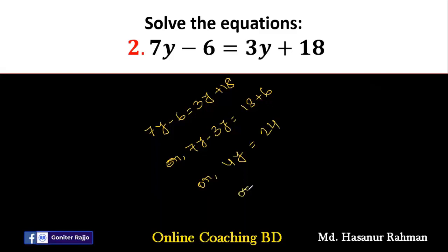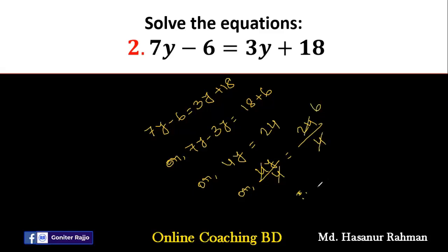Now we have to divide this equation by 4. So 4y divided by 4 and 24 divided by 4 — 4 divided by 4 is 1, and 24 divided by 4 is 6. So the answer will be y equal to 6, and this is the required solution.